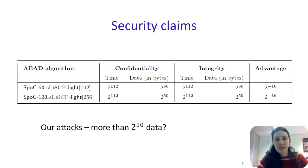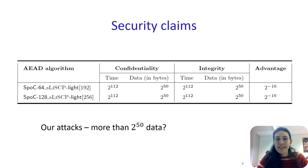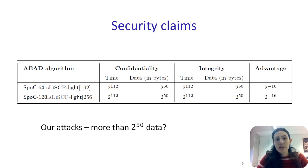This table summarizes the security claims of the authors. As we interpreted them, the best attack on either version of SPOC should use at most 2^50 data encrypted under the same key and has a time complexity of at most 2^112. Furthermore, the attack aiming at either breaking the confidentiality or the integrity of the cipher should have a success probability of at least 2^-16. At first sight, it seems that all our attacks have complexity more than 2^50 data; however, our attacks use different keys and therefore the restrictions are satisfied.